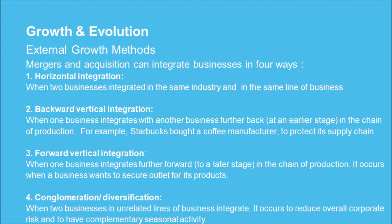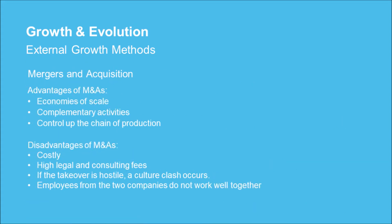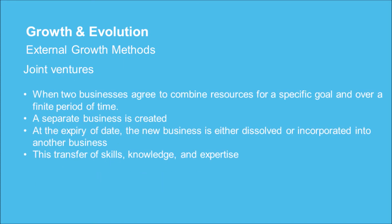4) Conglomeration or diversification — when two businesses in unrelated lines of business integrate, occurring to reduce overall corporate risk and to have complementary seasonal activity. Advantages of M&A: 1) economies of scale, 2) complementary activities, 3) control up the chain of production. Disadvantages of M&A: 1) costly, 2) high legal and consulting fees, 3) if the takeover is hostile, a culture clash occurs, 4) employees from the two companies do not work well together.